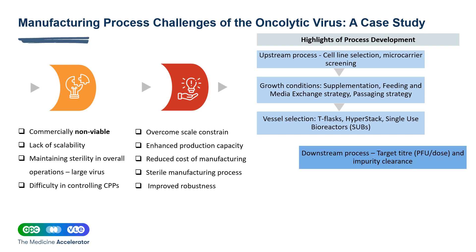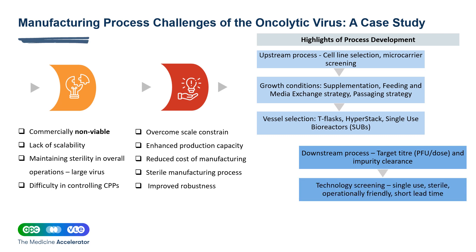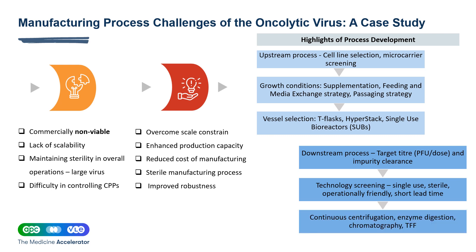On the downstream process side, the key focus is achieving the target PFU per dose and demonstrating superior impurity clearance. Technology selected for this process must be single-use, sterile, operationally friendly, and have a very short lead time. The downstream train can be comprised of continuous centrifugation, enzyme digestion, chromatography, and TFF unit processes.